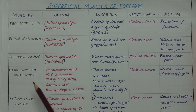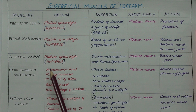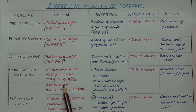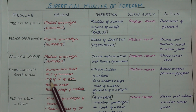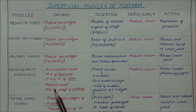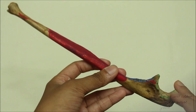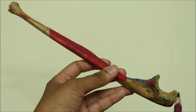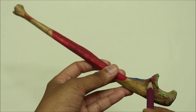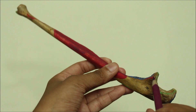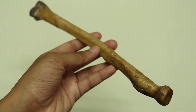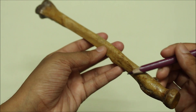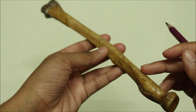Moving on to the next muscle, we have the flexor digitorum superficialis. It originates from two heads: the humero-ulnar head and the radial head. The humero-ulnar head originates from the medial epicondyle of the humerus and the medial border of the coronoid process of the ulna. The radial head originates from the anterior oblique line of the shaft of the radius, right here.